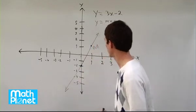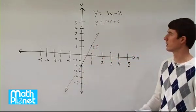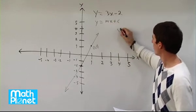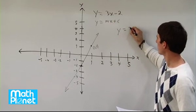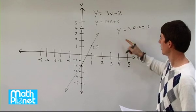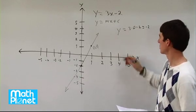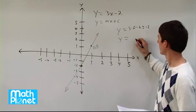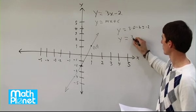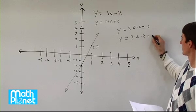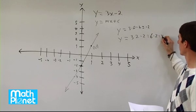So what you might want to do is check a couple of points. We've already seen that if we plug in zero, we have y equals 3 times zero minus 2, which equals negative 2. So that's what we got for y. If we try one more — if we plug in x equals 2 — we have 3 times 2 minus 2. That gives us 6 minus 2, which is 4.